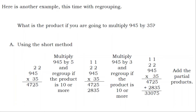What is the product if you multiply 945 by 35? Using the short method: multiply 945 by 5 and regroup if the product is 10 or more. Then multiply 945 by 3 and regroup if the product is 10 or more.